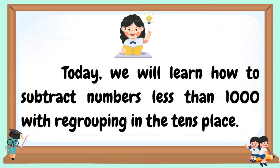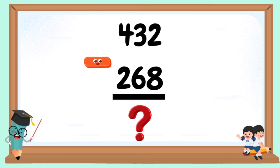Today, we will learn how to subtract numbers less than 1,000 with regrouping in the tens place. 432 minus 268. 8 minus 2 cannot be done, so we need to borrow 1 from 3. The 3 will become 2, and 2 will become 12.